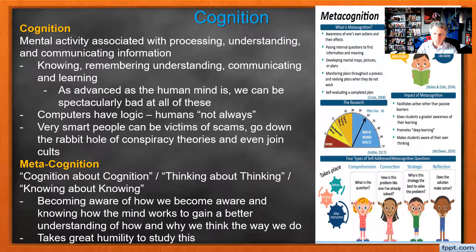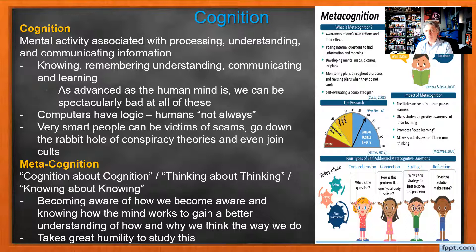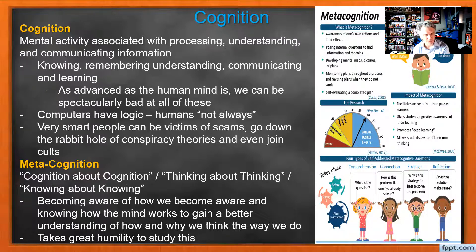Computers are very logical — you program them, they do math, logic. Humans? Not all the time, we're not always logical. So when we study cognition, we want to study logical thinking, but we also want to understand the illogical thinking. Let's study the rational, but the rational is easy to understand. It's the irrational thinking — the 'why did I do that?' How many times have you gotten to the end of the day going, 'why did I say that?' That's what we want to study.